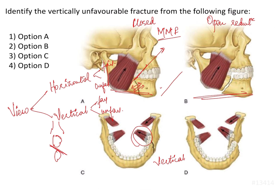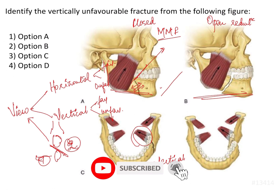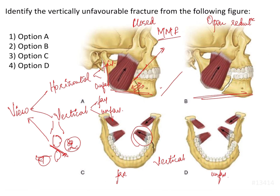If the tooth is here and the angle of the mandible is here, and the fracture line runs in a particular direction, one fragment and the second fragment are defined. The medial pterygoid pulls the mandible such that the fracture line reduces itself — that is a vertically favorable fracture. If instead there is further separation of the two fragments, that is a vertically unfavorable fracture requiring open reduction, whereas the favorable one requires only closed reduction.